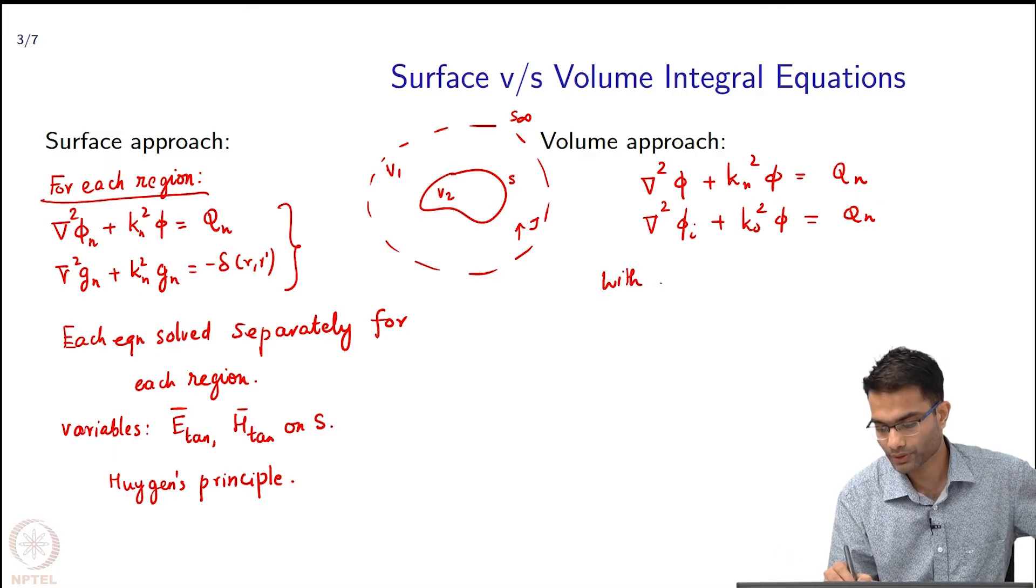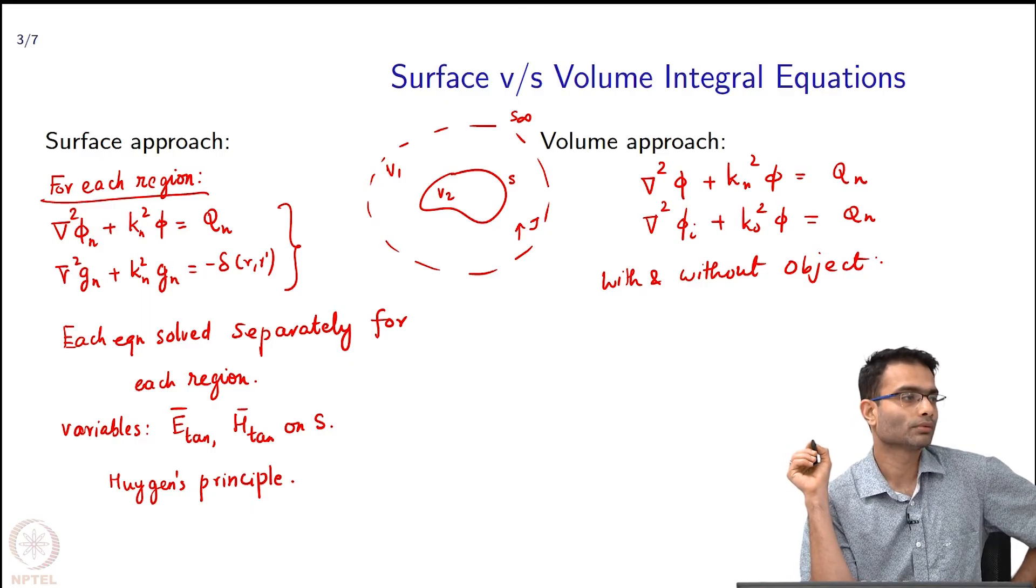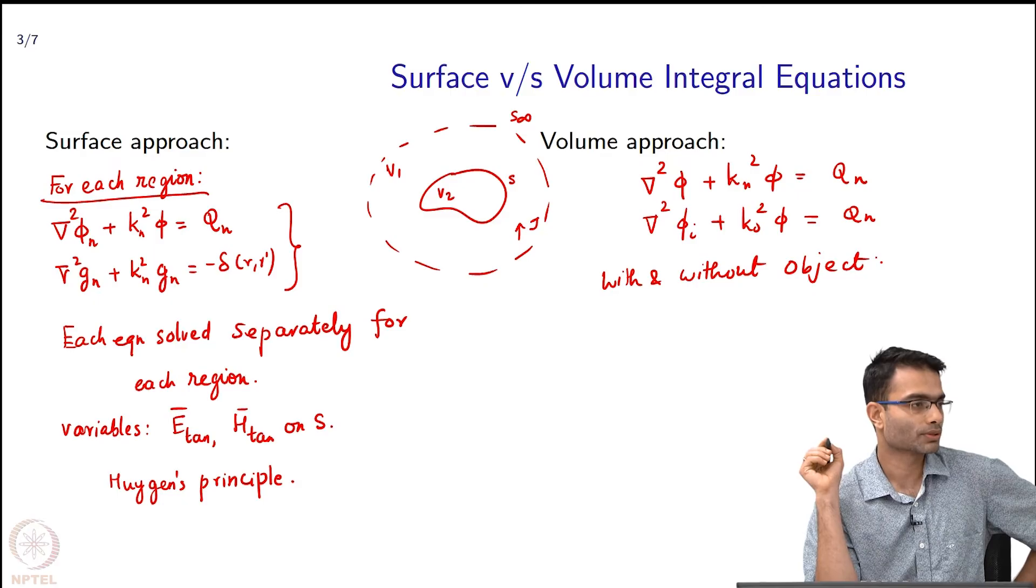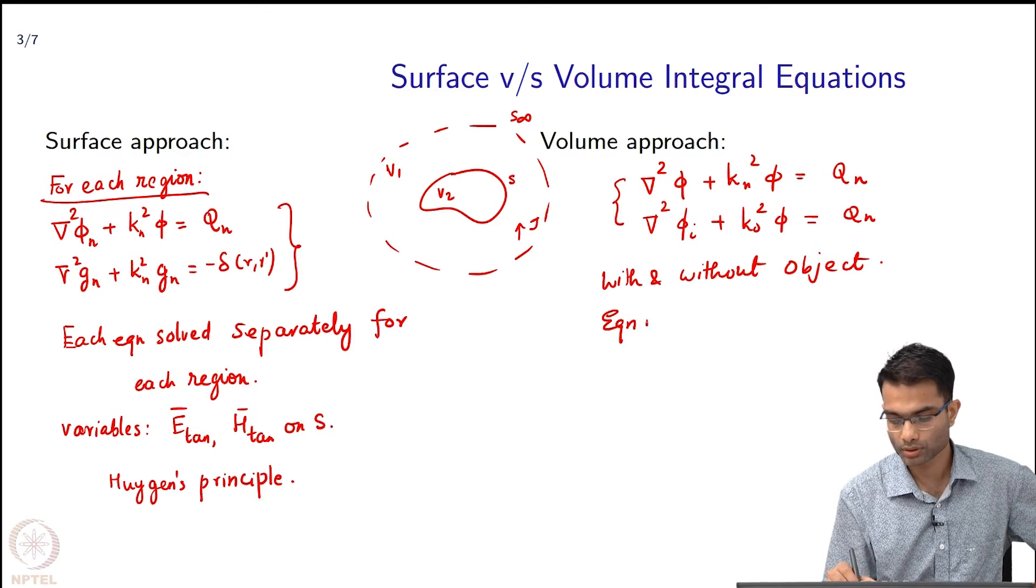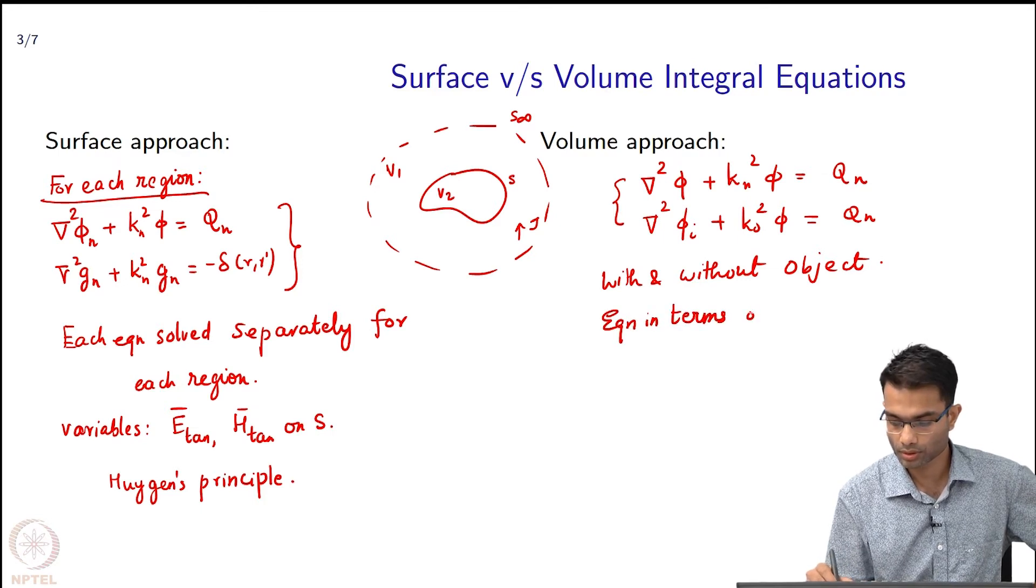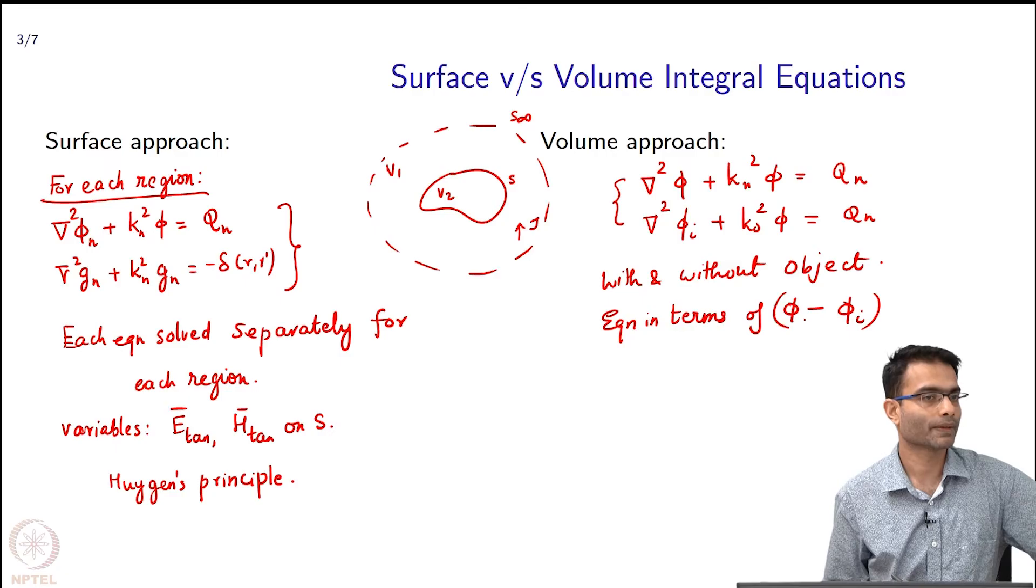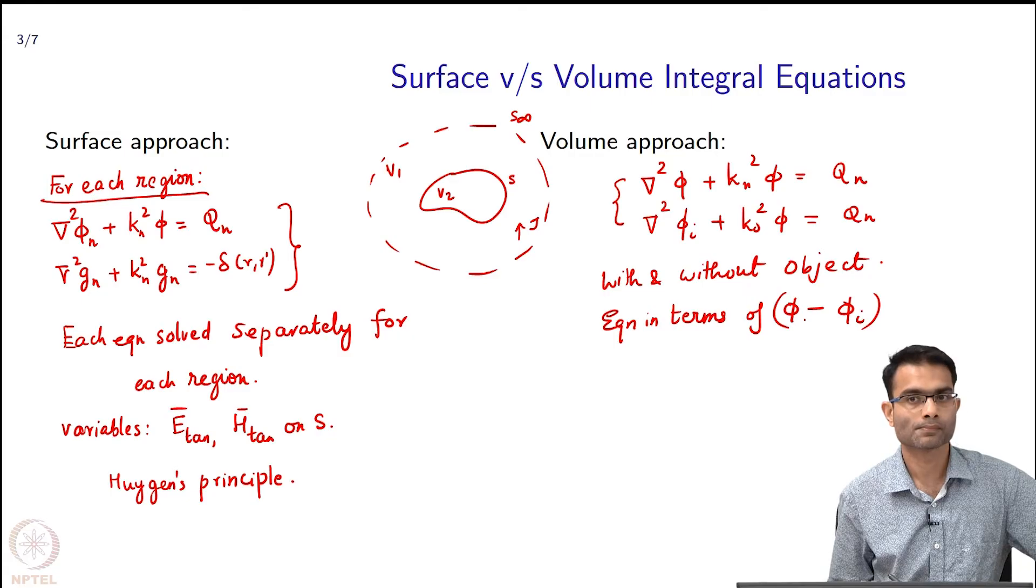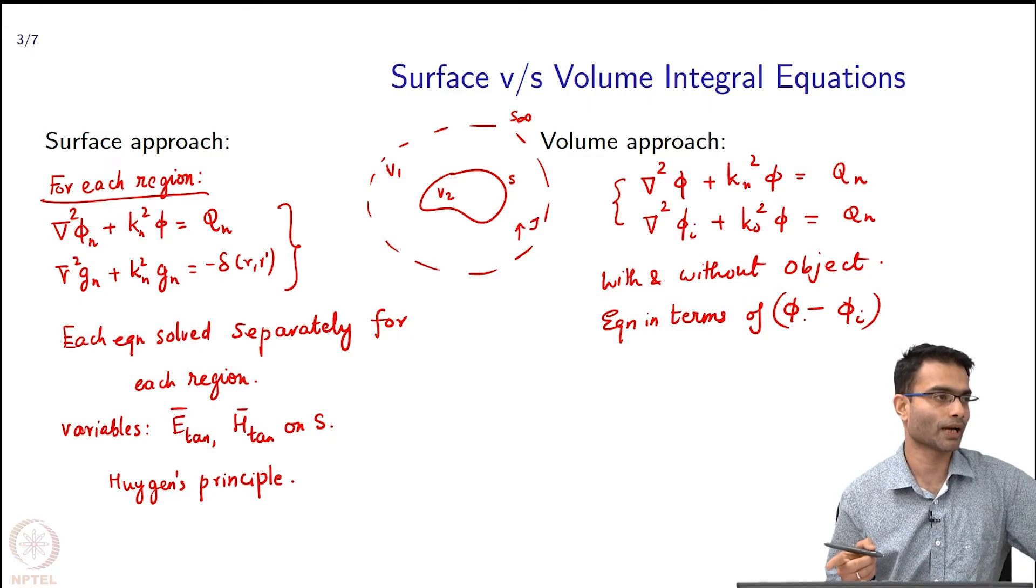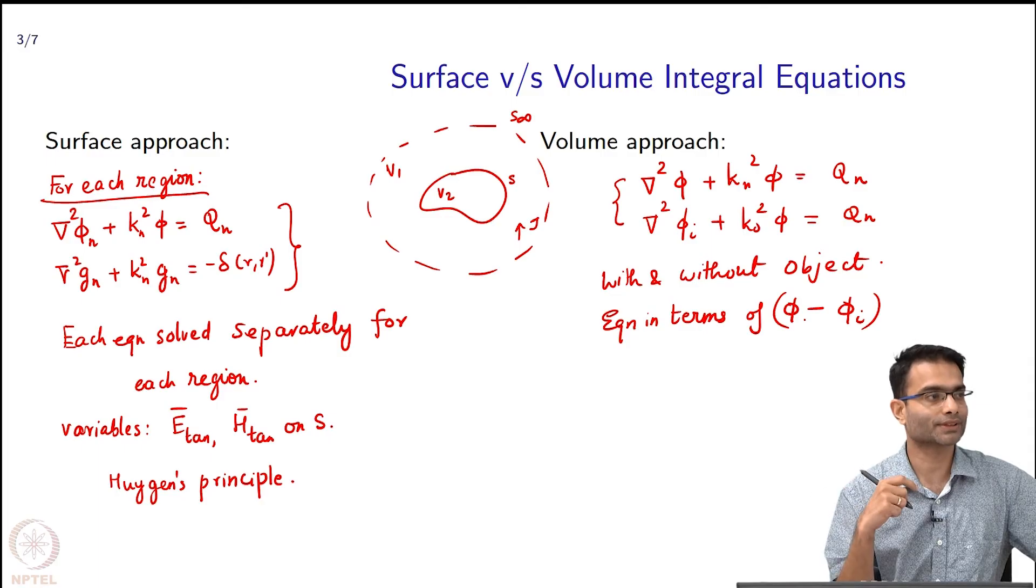I eliminated the current source and I got an equation in terms of φ minus φᵢ. Did I need to use the Green's function in this? Well once I got the differential equation, the solution to it was written in terms of Green's function as a convolution, but which Green's function did I have to use?